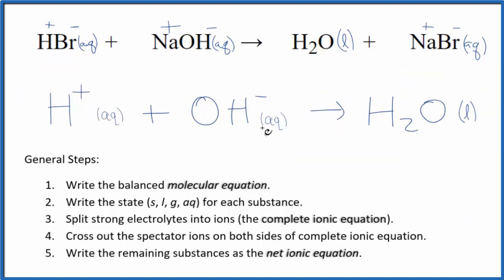So this is the balanced net ionic equation for hydrobromic acid plus sodium hydroxide. You'll note the charge is conserved. We have a positive and a negative. They balance out, give us a neutral compound. And mass is conserved as well.